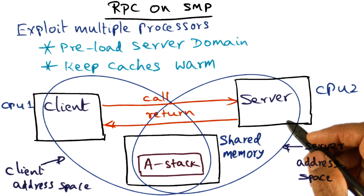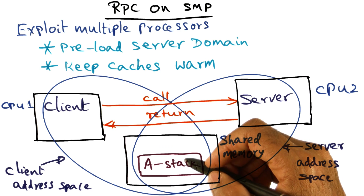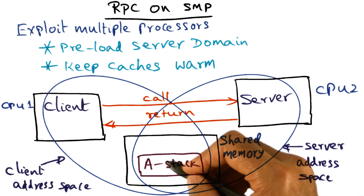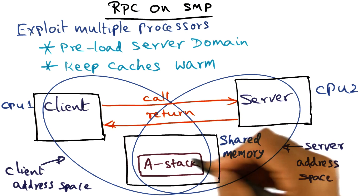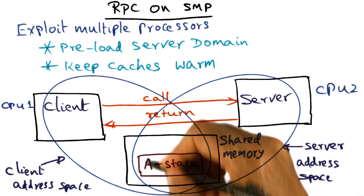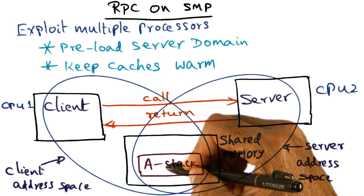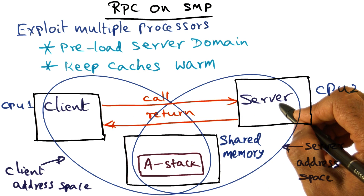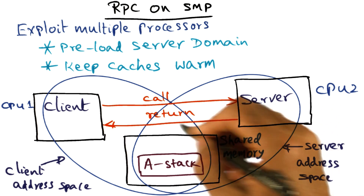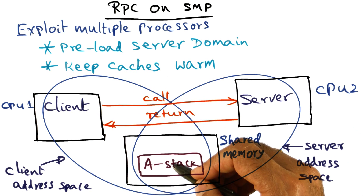This is the happy state of the world. We have first of all eliminated kernel intervention in making the actual call and return between client and server by providing an argument stack in shared memory — shared in the address space of both the client and the server. This way, the client can pass the actual arguments of the call to the A stack and the server can retrieve it from the A stack without kernel intervention. When the server is ready to return results, it can put them in the A stack so they are available for the client.